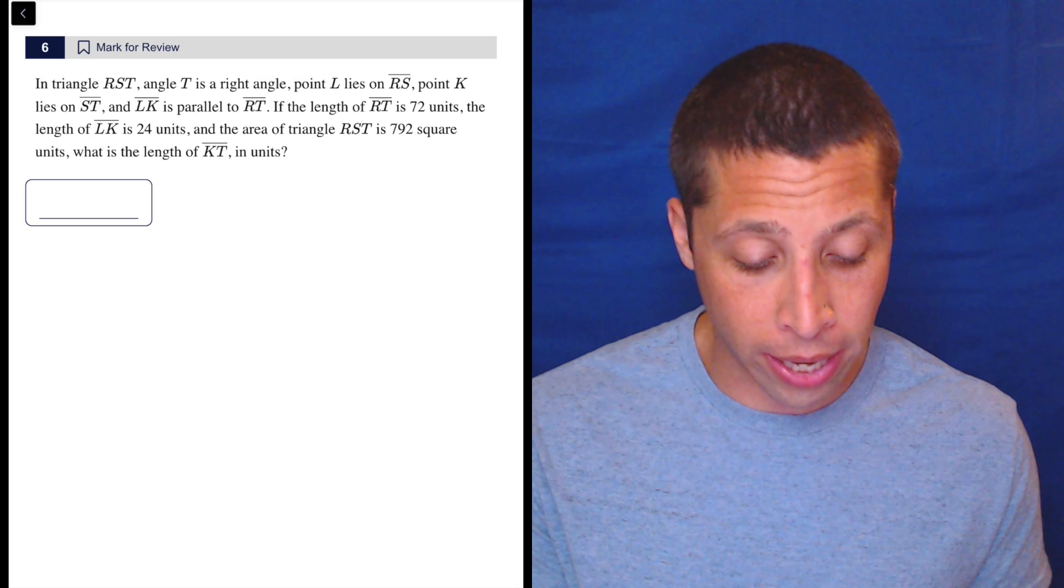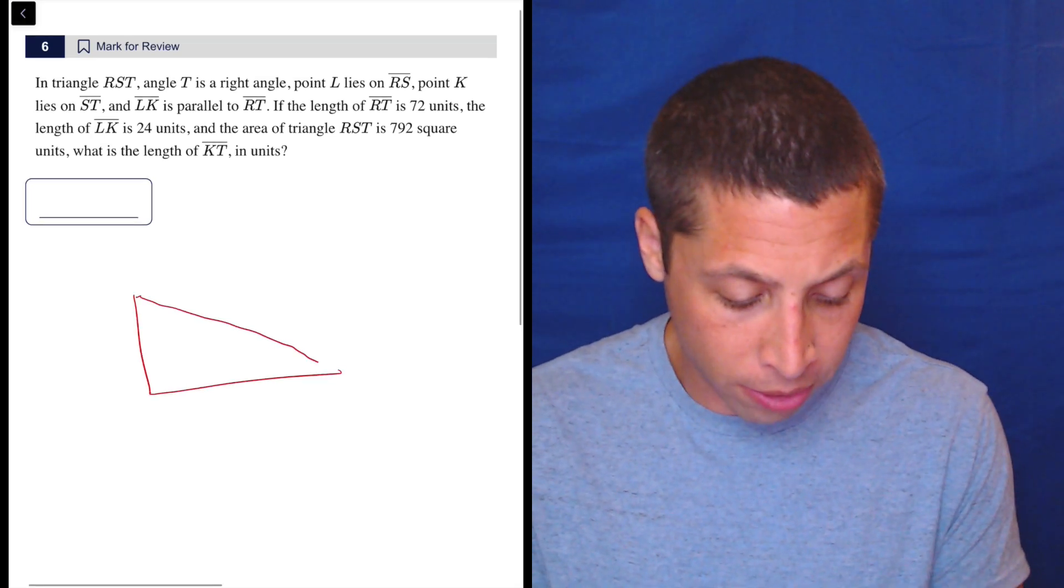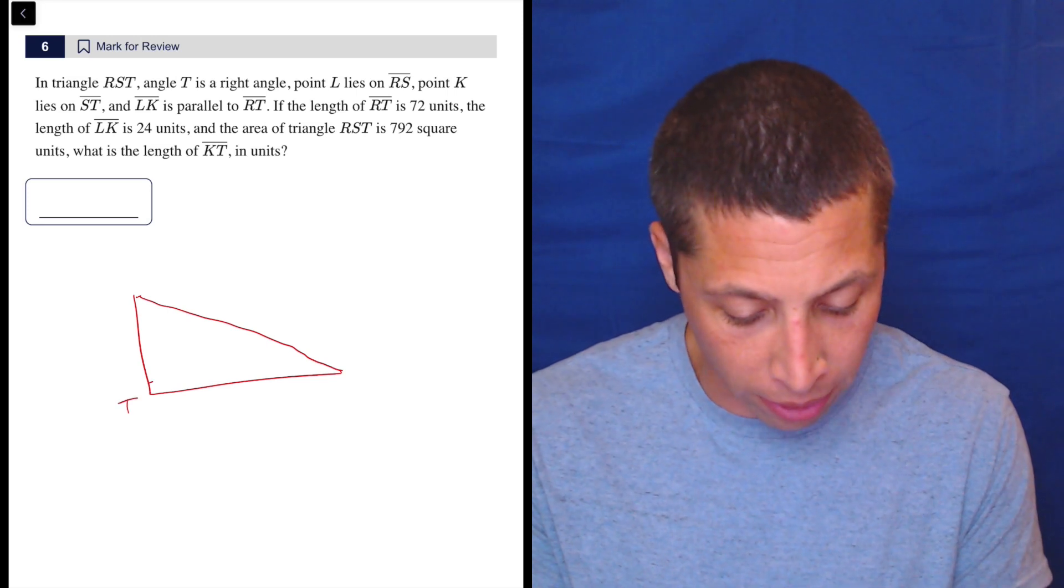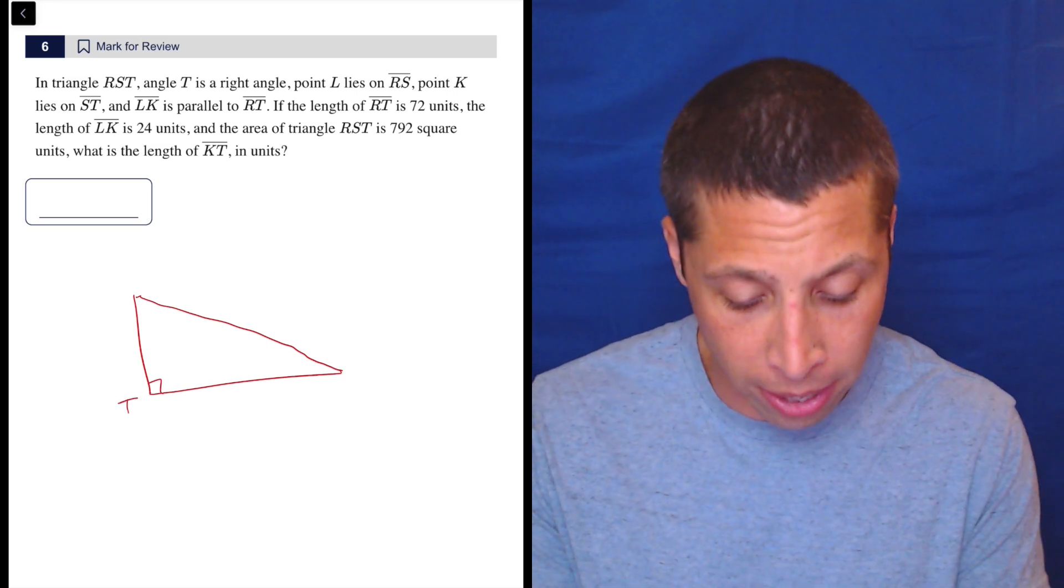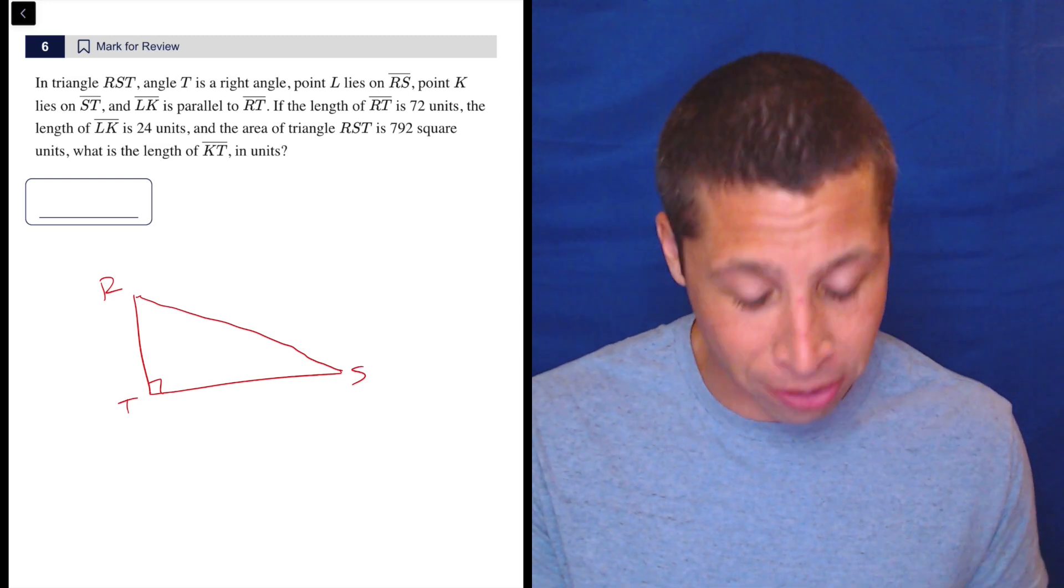In triangle RST, angle T is a right angle. Okay, so we've got a right triangle. So let's do it. I don't worry about scale. We're going to let the picture tell me everything I need to know. So T is the right angle. That's got to be there. R and S. We have pencils too, so if we make a mistake we can always erase and try again.